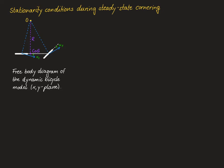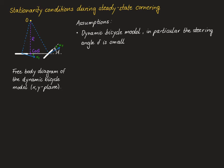To this end, let's look at the stationarity conditions during a steady-state cornering maneuver. This diagram shows the geometry of the dynamic bicycle model. We can see the local velocity vectors at the front and rear wheels with the corresponding slip angles, the instantaneous center of rotation O, and the center of gravity (COG). The first assumption is that of the dynamic bicycle model; in particular, the steering angle delta of the front wheel is small.